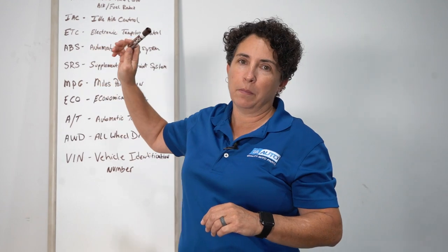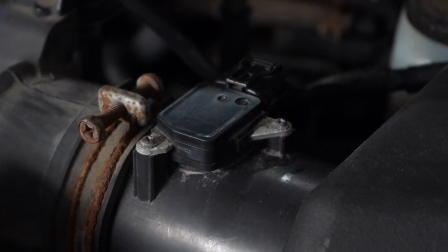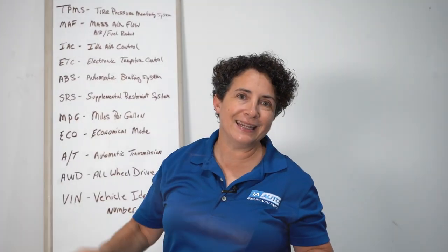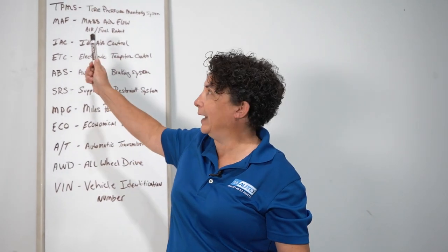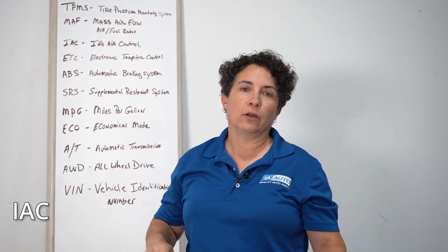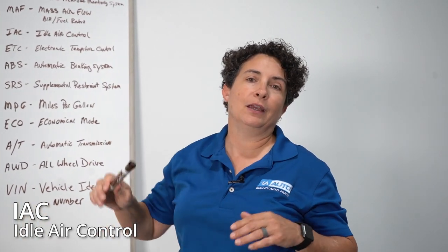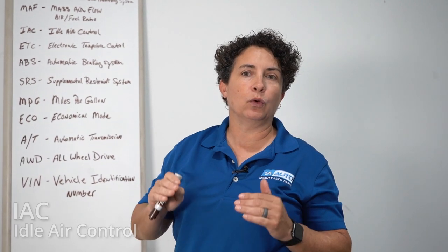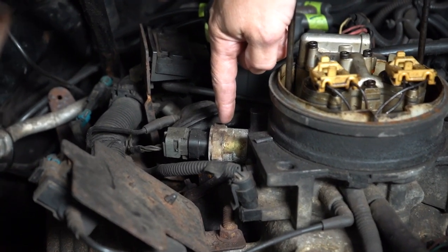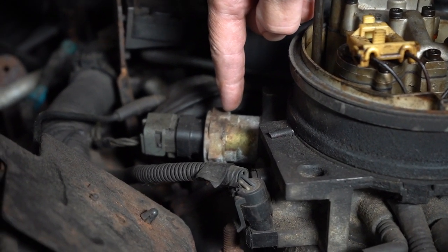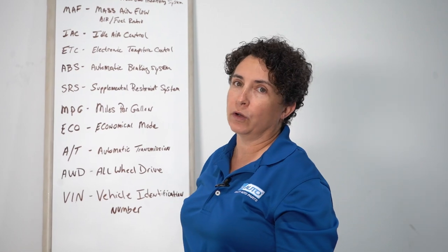Now it's electronically controlled — it's the MAF, mass airflow sensor. It's located in the engine compartment right off the air box, because that's where the airflow is going into the throttle body where the fuel injection is. That's where it ties into the IAC, idle air control. It mixtures the air with the fuel and knows on your acceleration whether you're going fast or slow, whether it's cold or warm out, and tells it how to mix the air-fuel ratio. They all work together.